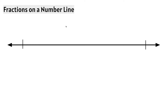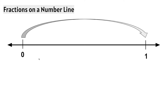Let's take a look at this number line. This number line has the whole numbers 0 and 1. We notice that there are no tick marks between the 0 and the 1 — there is just one space between them. If we're labeling this number line with fractions, we know that the denominator will have to be 1, because there is one space between the 0 and the 1.